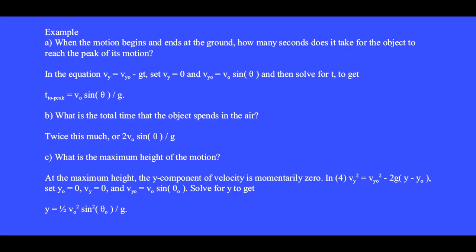In the range equation, when the motion begins and ends at ground level, how many seconds does it take for the launched object to reach the peak of its motion? Please fill in all the algebra steps to obtain these results. In the equation v sub y equals v sub y zero minus g t, we set the final speed v sub y equal to zero and the initial speed v sub y zero equals v zero sine theta zero, then solve for t. The time to the peak is v zero sine theta divided by g.